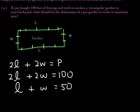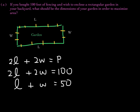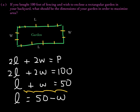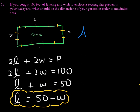Furthermore, we can isolate one of these variables — the length. So length equals 50 minus w. Remember that because we'll come back and use this in a minute. Another formula we have for this problem is the area: the area of this rectangle is the length times the width.